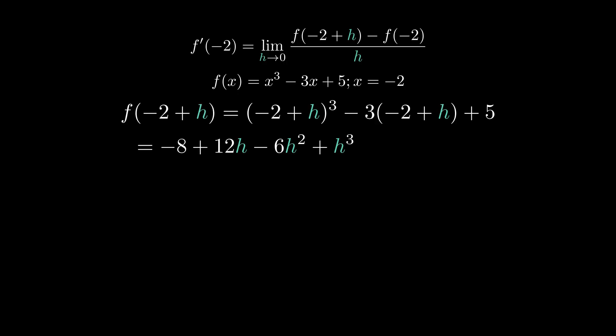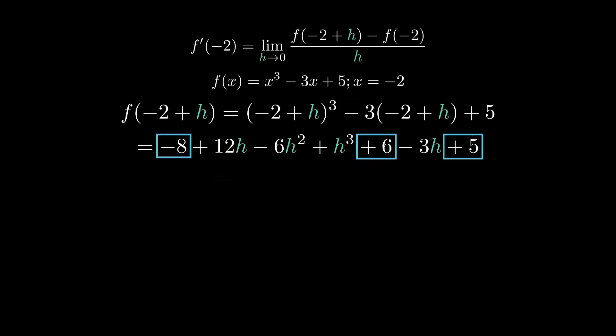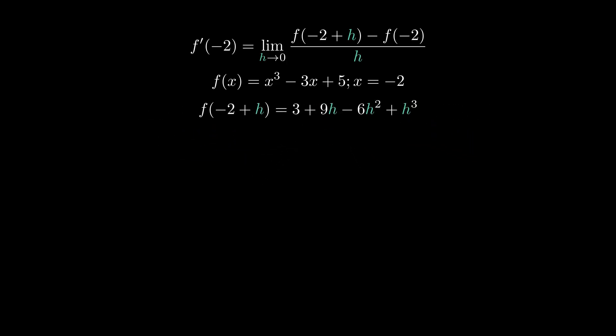The next thing we're going to do is distribute negative 3 to the negative 2 plus h. When we do that, negative 3 times negative 2 gives us positive 6, and negative 3 times h gives us negative 3h. Then we bring down that plus 5. From here, we can clean this up by combining like terms. We have negative 8, a 6, and a 5. Negative 8 plus 6 is negative 2, and negative 2 plus 5 is 3. We also have 12h and negative 3h, so 12h minus 3h gives us 9h. So we end up with 3 plus 9h minus 6h squared plus h cubed. We have fully simplified f of negative 2 plus h.